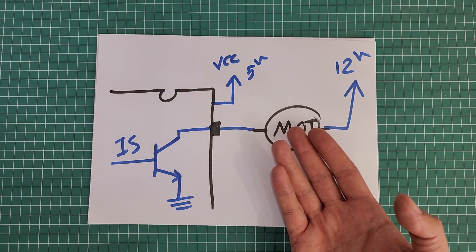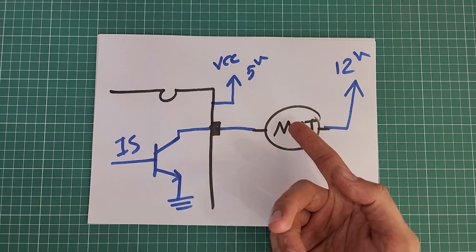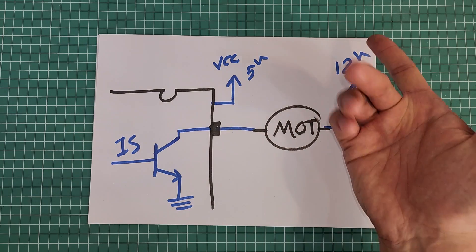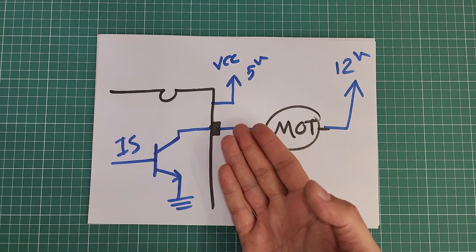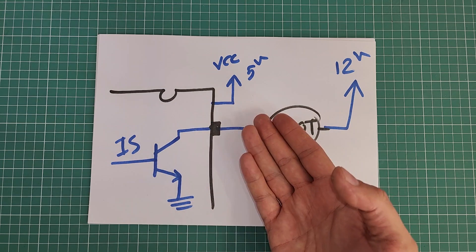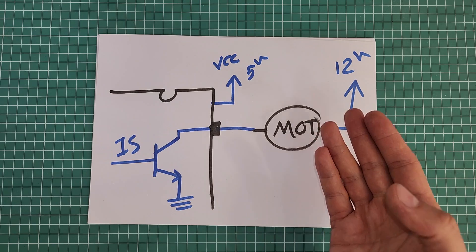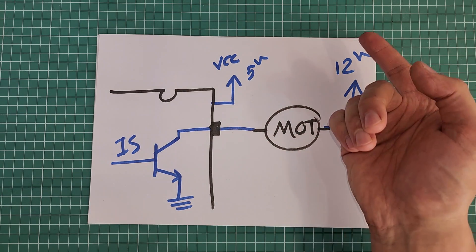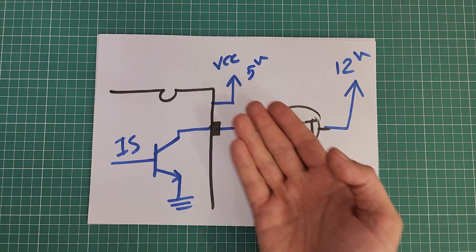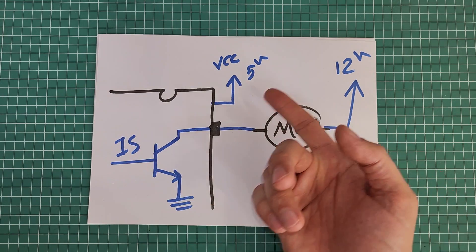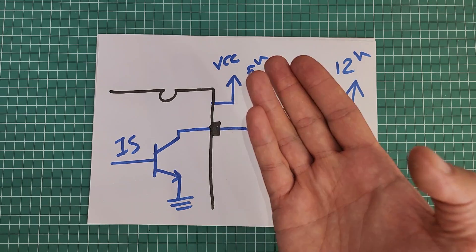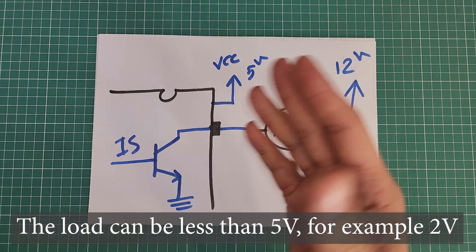When driving a load using an open collector output, you connect one terminal of the load — for example, a DC motor — to its working voltage and the other terminal to the open collector output. The open collector output provides ground for the load. The working voltage can be more than the logic voltage: for example, the working voltage of the motor is 12V while the logic voltage is 5V, or it can be less. Logic voltage is the voltage that digital parts of the circuit like MCUs work with.